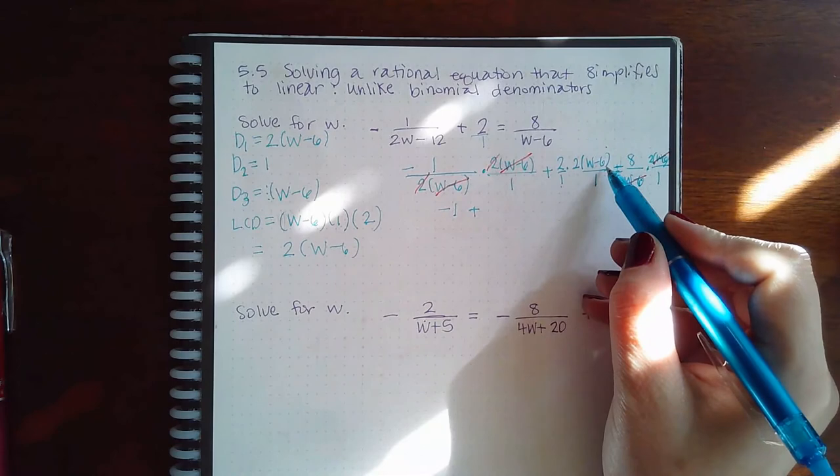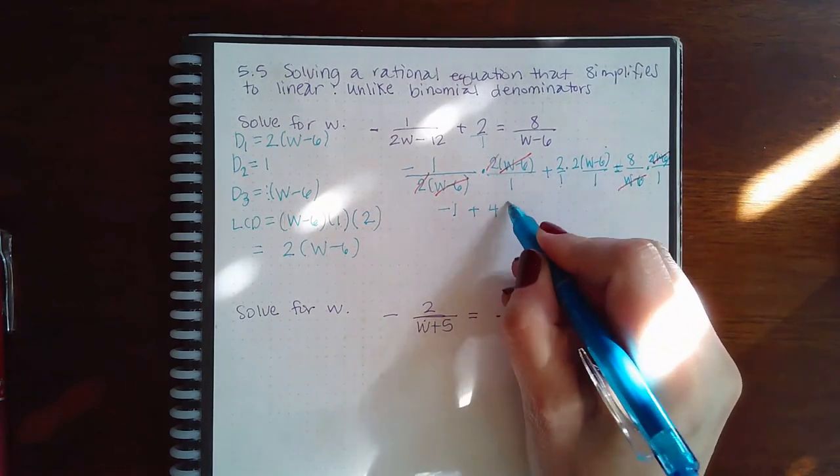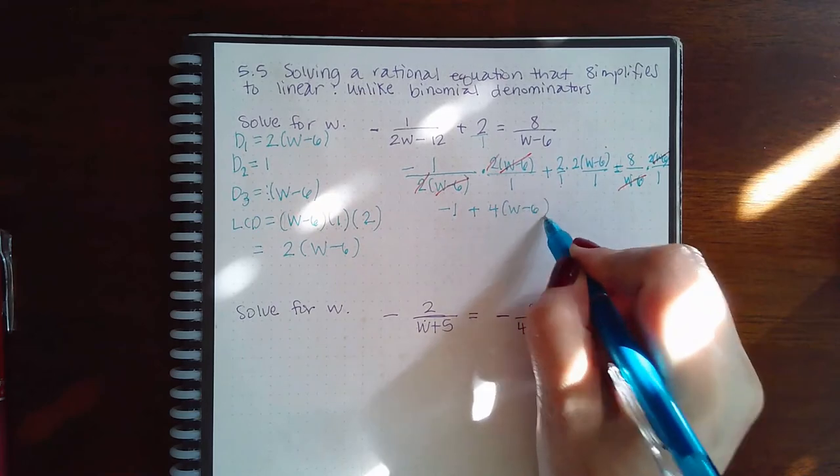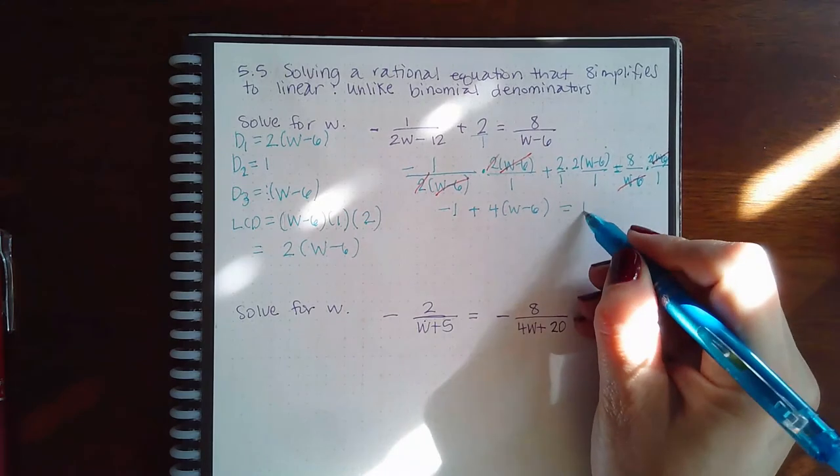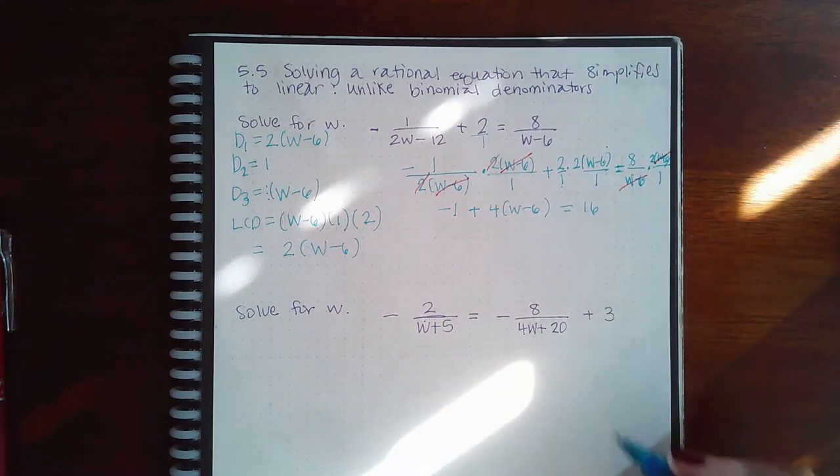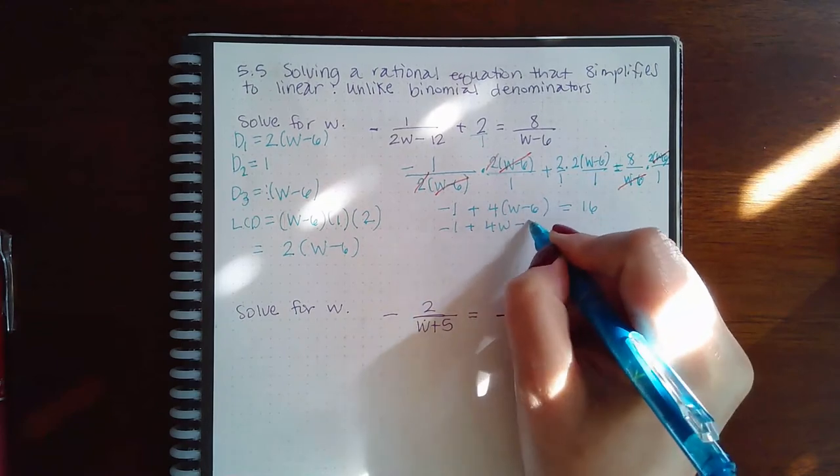Here I've got a bunch of stuff to multiply, so let's just multiply the positive 2 times the positive 2 for now, and then we'll multiply the W minus 6 later. And here we end up with 8 times 2, which is 16. And so now we can distribute that 4, 4W minus 24.